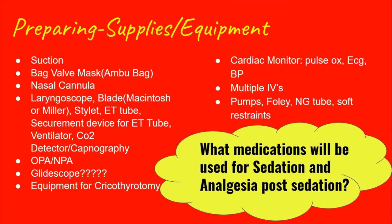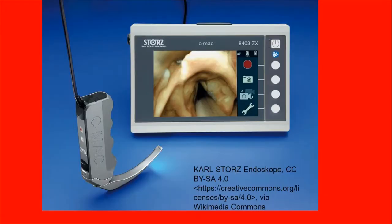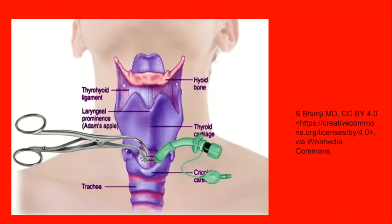And then lastly for preparing, we need to have the necessary supplies for a cricothyroidotomy just in case a surgical airway needs to be placed. Essentially, if they're trying to intubate and everything's going wrong — your patient is crashing — they're going to make a little slit right in the throat and place the tube in there. That's a backup airway management technique, a surgical management technique.